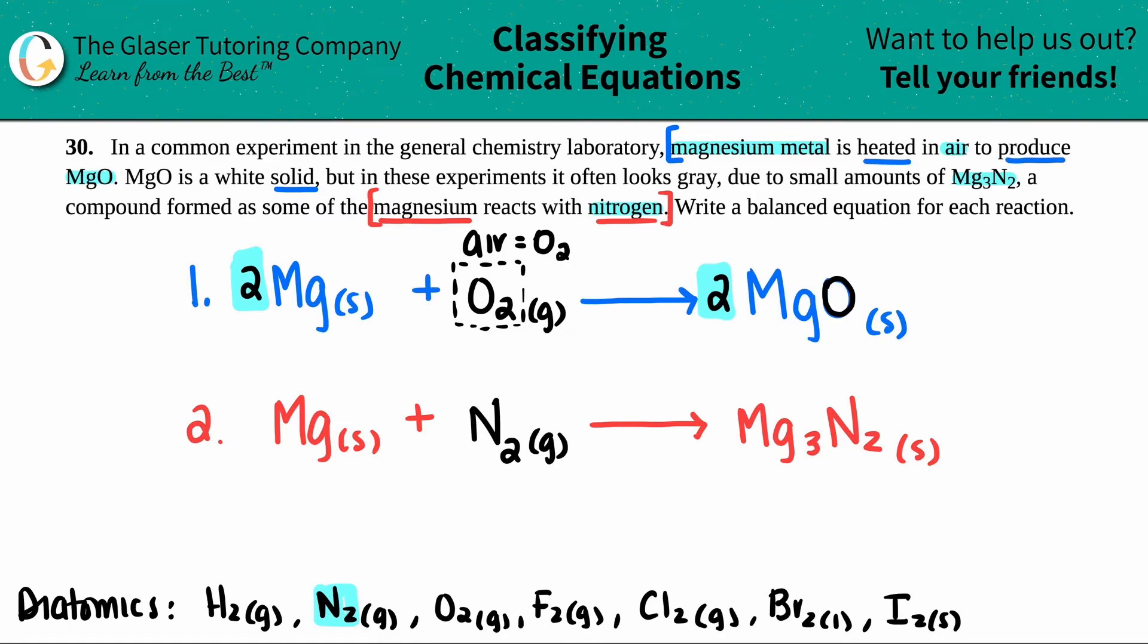Now we just have to balance. Let's see. I'll start off with the nitrogens. I have two nitrogens here and I have two nitrogens here. So that balances. Now I have one magnesium here, but I got three magnesiums here. So that means that I have to put a value in front of this one. What do you think, guys? I need three. So I'm going to put a three here. And now my equation's balanced. And here are your two equations. So this one was the first one with the oxygen, aka the air. And this one was when it reacts with nitrogen. There you go.